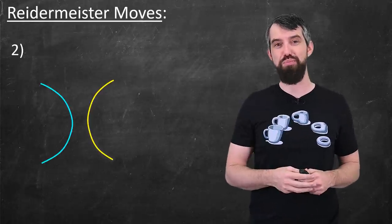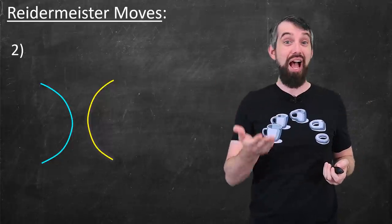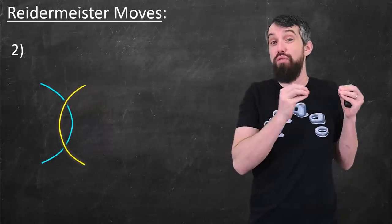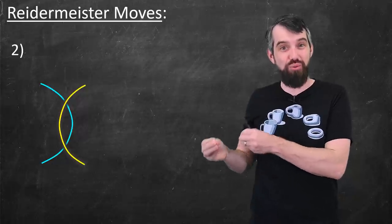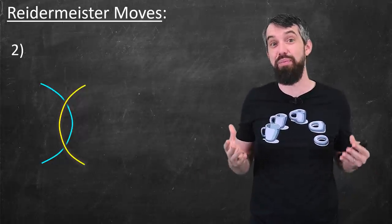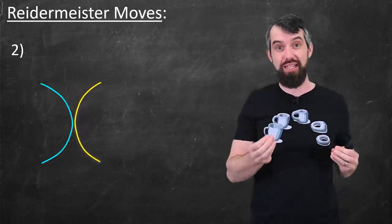The second Reidemeister move is if I have two loops that are getting close to each other, I can actually send one over top of the other, thus creating two different knot crossings. That's exactly the same thing as well. I can undo it in precisely the same way.